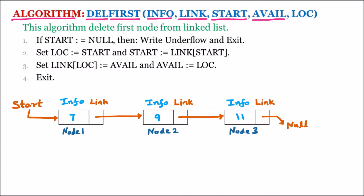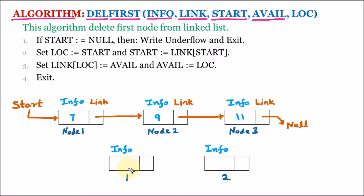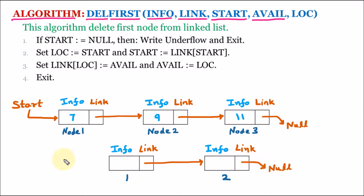Let us suppose that we have two available spaces, meaning we have two free nodes available. These nodes also contain two parts: the first is the info part, which is empty because these are free available spaces, and the second is the link part, which contains the address of the next node. The first free node's link part contains null. The available list has an avail pointer which contains the address of the first free node.